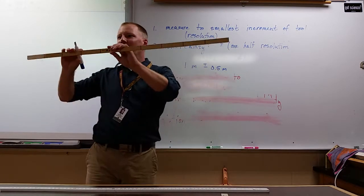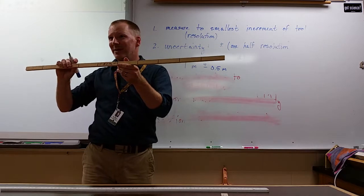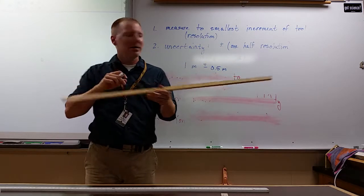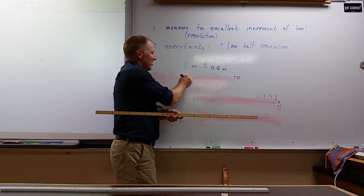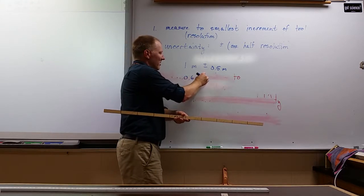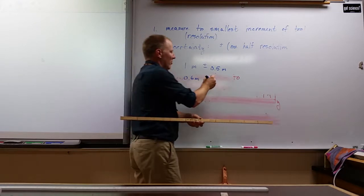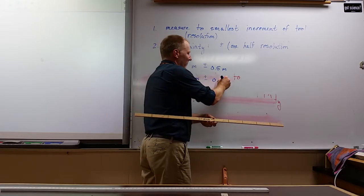When we flip this over, now we know it by 10 centimeter sections or 0.1 meter. So we could say 0.6 meters with an uncertainty of half of this, which is five centimeters or 0.05 meters.